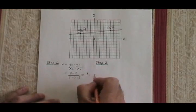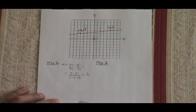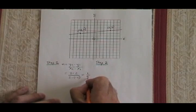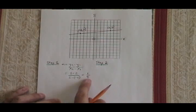Simplifying, 3 minus 2 is 1 and 5 minus negative 4 is the same as 5 plus 4, it's 9. So this straight line has a slope of 1 ninth.